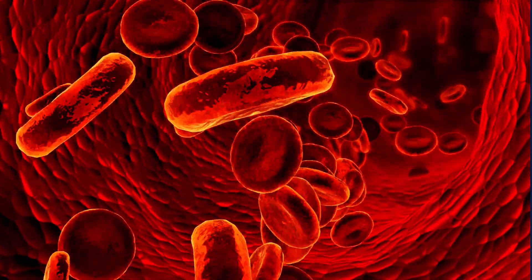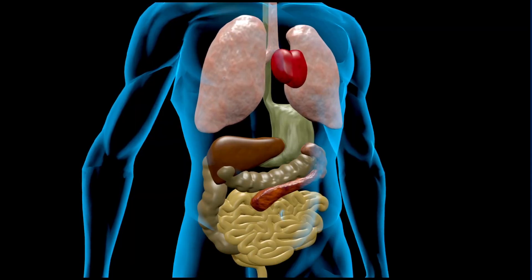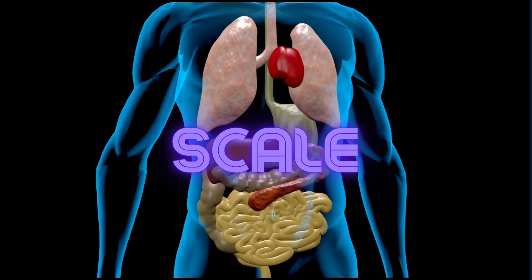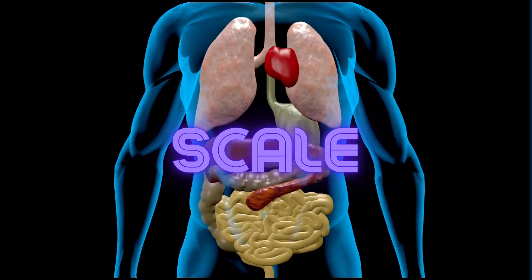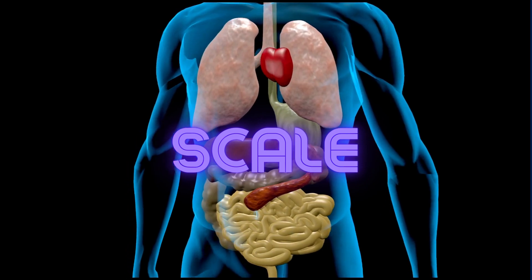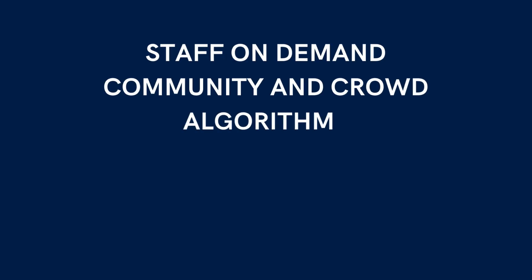Now think about the organs in the body. These are like the scale attributes, the five external characteristics of an exponential organization: staff on demand, community and crowd, algorithms, leveraged assets, and engagement.